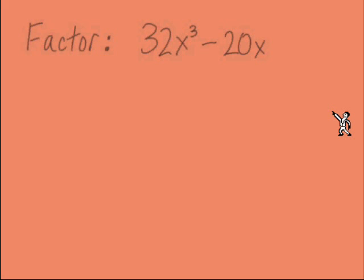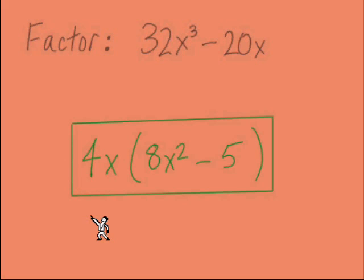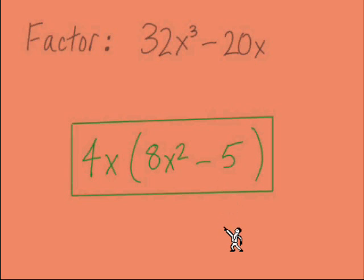Here's a problem for you to try. We're looking at a problem and thinking: is there a GCF — a common factor we can divide out of both terms? Put that GCF in front of parentheses and figure out what terms we need inside. Pause the video, take a few minutes to work it out, then come back for the answer. The answer: 4x is the GCF, so in factored form this is 4x times the quantity 8x squared minus 5.